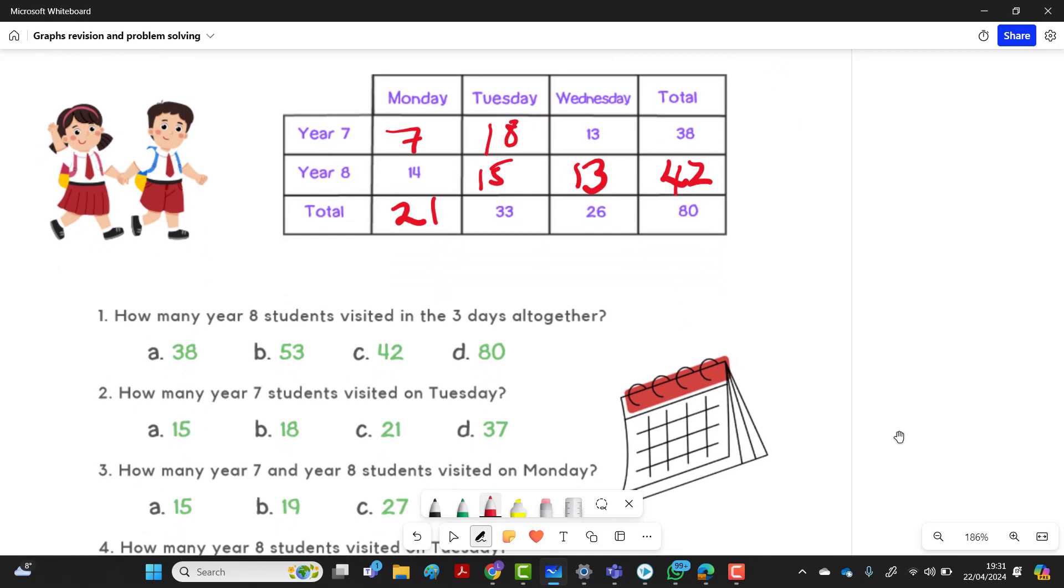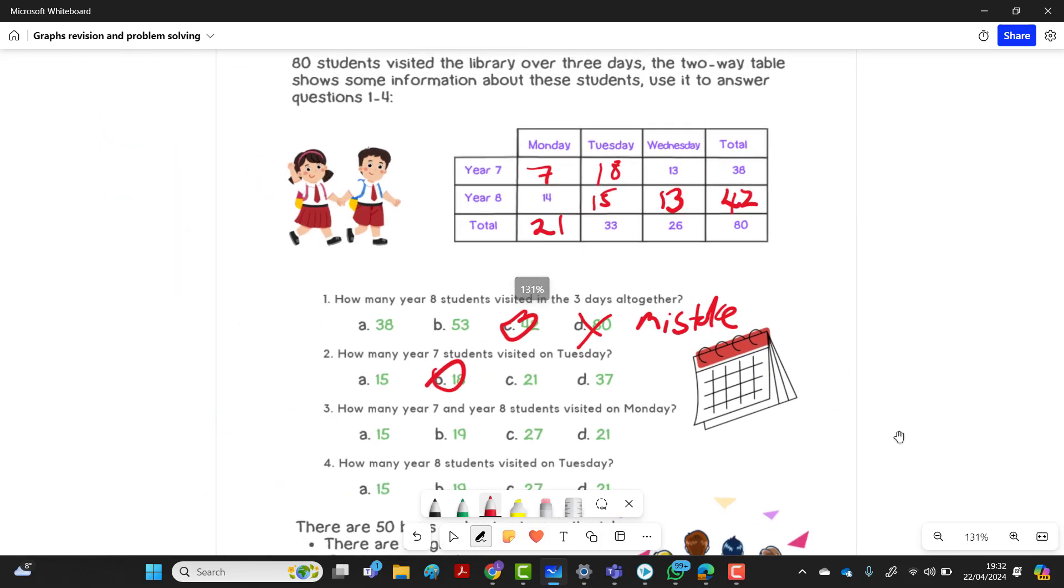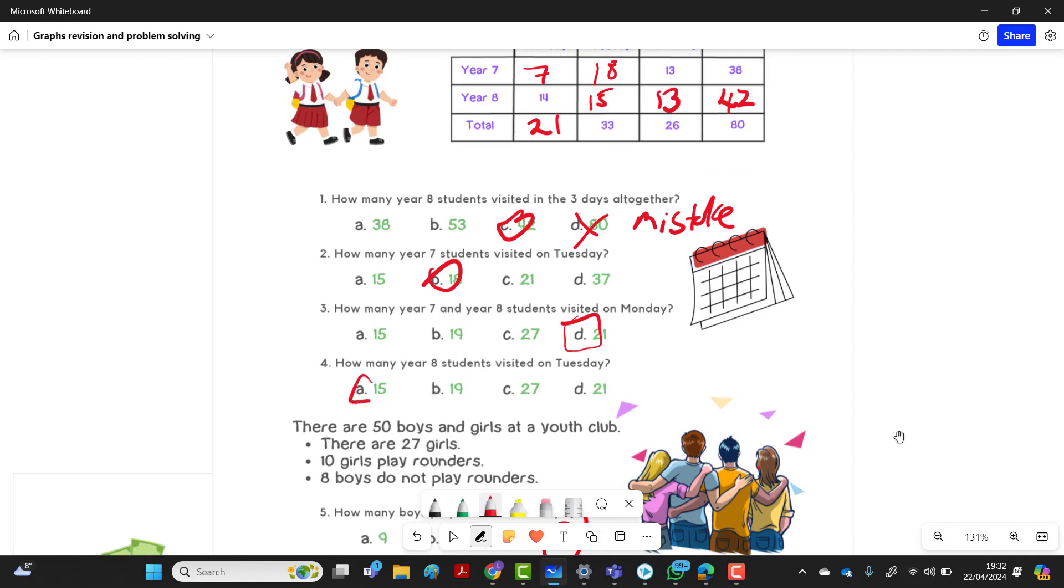And now we can also do Monday, follow the vertical. So 21 take away 14 will give you year seven Monday, seven there. And we can do Tuesday year seven. So you do 33 take away 15, 18. So we know this table is right. So let's go to the questions. How many year eight students visited all three, three days together. So that'd be number one. See, that's a mistake here in the answers.